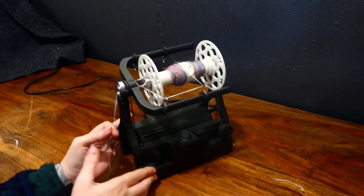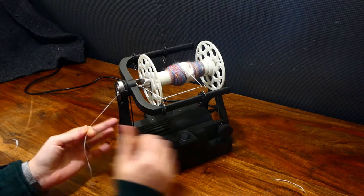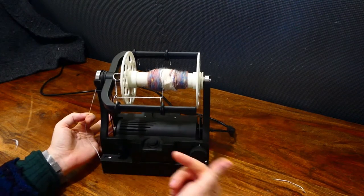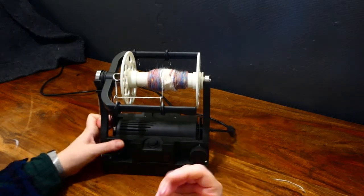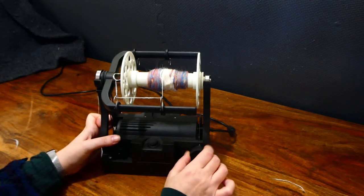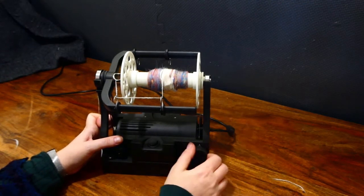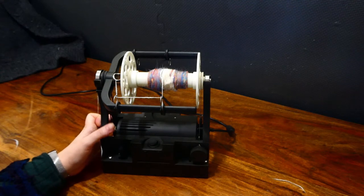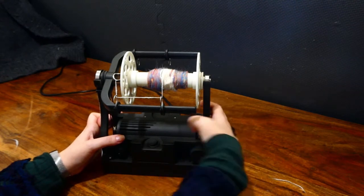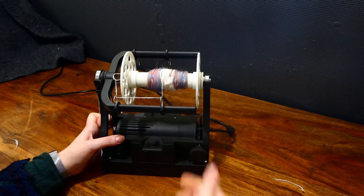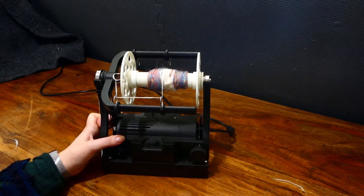Once you've checked all those things you should be able to get take up again. If you are getting take up but it's not enough for whatever very fat yarn you're spinning and you've got this nice and tight and your spring stretched then you might want to change out your brake bands for a thicker string and a thicker band which I will discuss in the next question.